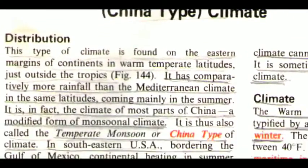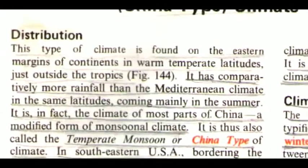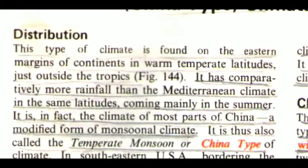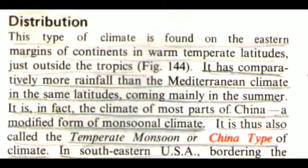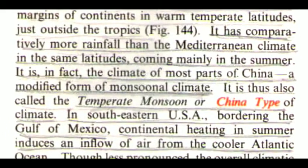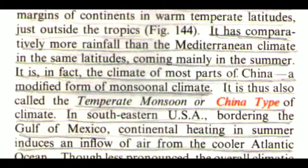This type of climate is found on the eastern margins of continents in warm temperate latitudes just outside the tropics. It has comparatively more rainfall than the Mediterranean climate in the same latitudes, coming mainly in the summer. It is in fact the climate of most parts of China, a modified form of monsoonal climate. It is thus also called the temperate monsoon or China type of climate.